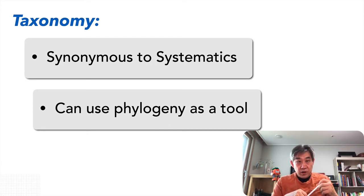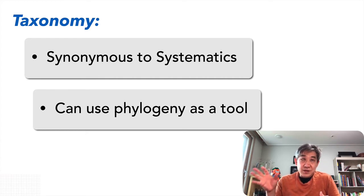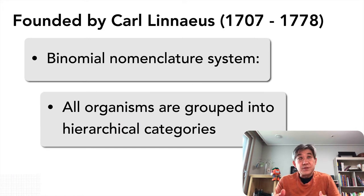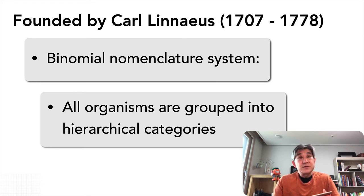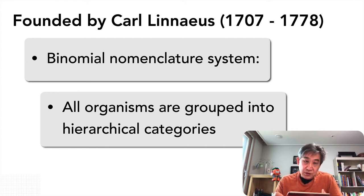Another way of calling taxonomy is systematics. When people call taxonomy systematics, they usually try as much as possible to incorporate the phylogeny aspect as a tool. The beginning of this taxonomy was made possible by one renowned biologist — back then known as a naturalist — the Swedish scientist Carl Linnaeus.